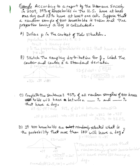Suppose that a random sample of 400 households is taken and the proportion having a dog is calculated. Part A says to define P — remember that P stands for the population proportion — define P in the context of this situation. To do so, first ask yourself what is the population of interest. In this case, the population is households in the U.S., and then ask what is the trait. In this case, the trait is having a dog.